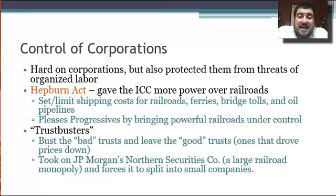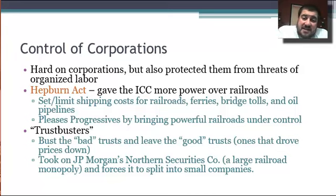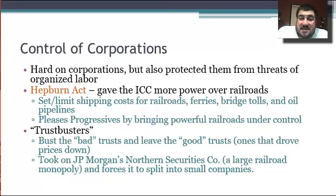Roosevelt takes control of corporations doing shady business practices. He protects them from the threats of labor, but is also hard on them. He signs the Hepburn Act, which gives the Interstate Commerce Commission more power over the railroads after the Supreme Court had stripped it away in the 1890s. The ICC can now set or limit shipping costs for railroads, ferries, bridge tolls, and oil pipelines, and each of their decisions carries the weight of a court order. This pleases progressives by bringing powerful railroads under control.